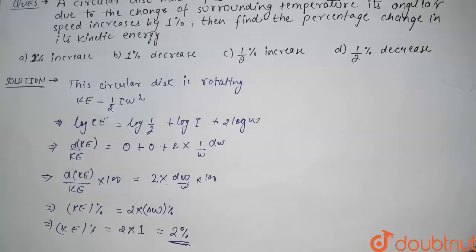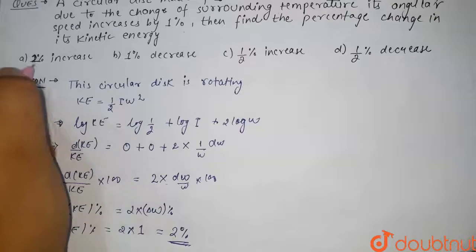Now since omega is also increasing, we can say that kinetic energy percentage will also be increasing. So 2 percent increase will be our option. So option D is correct.